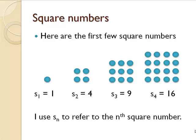Here are the first few square numbers: 1, 4, 9, and 16. Notice that these circles are arranged in a square pattern.